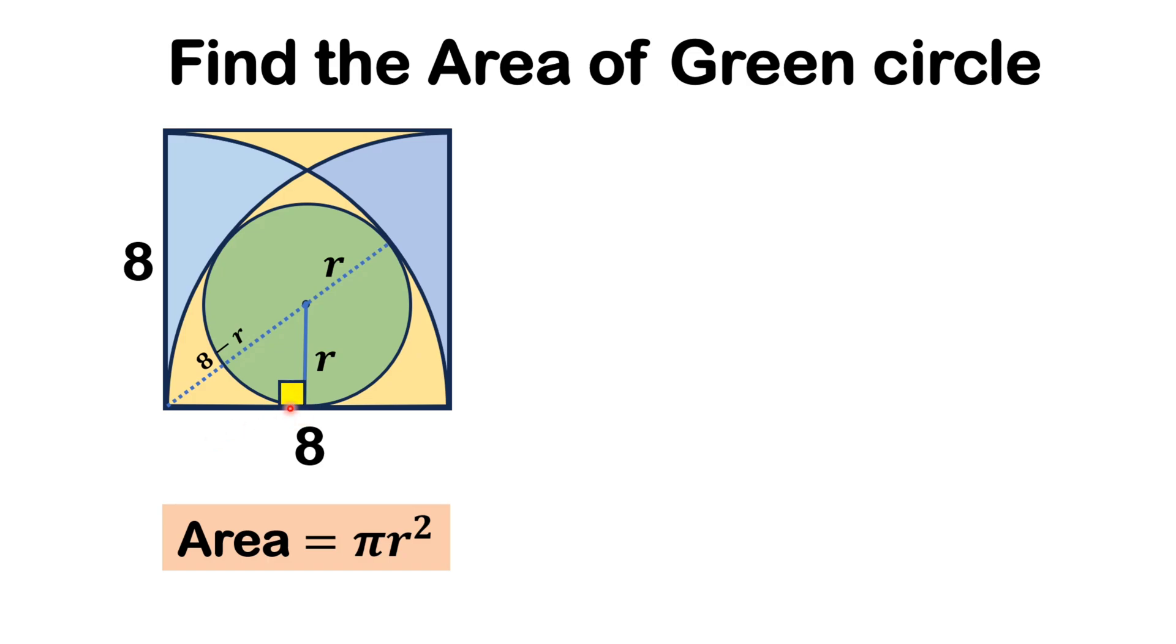This angle is 90 degrees, and this length is 4 units. So, from this right triangle, we have (8-r)² = r² + 4².